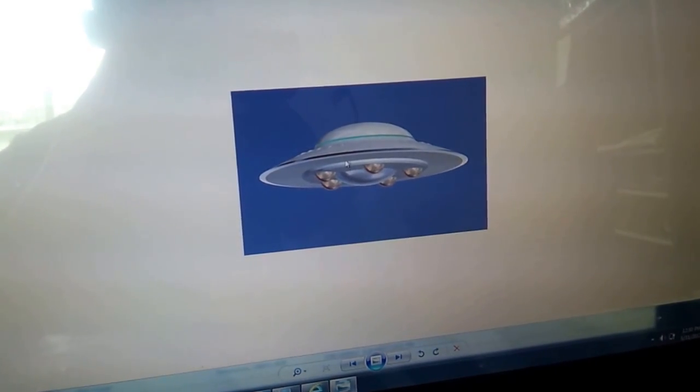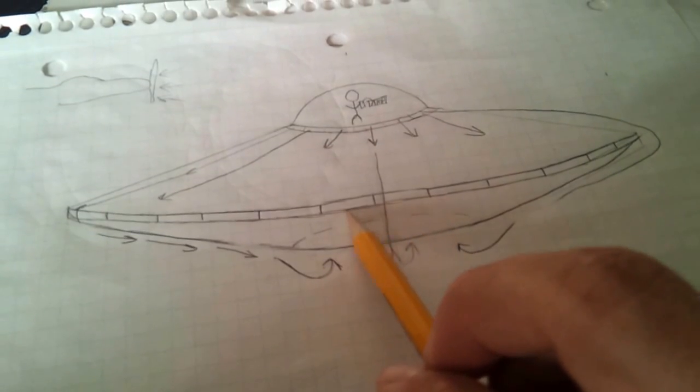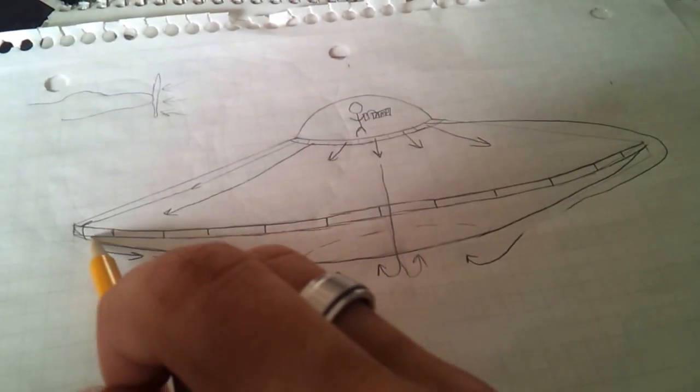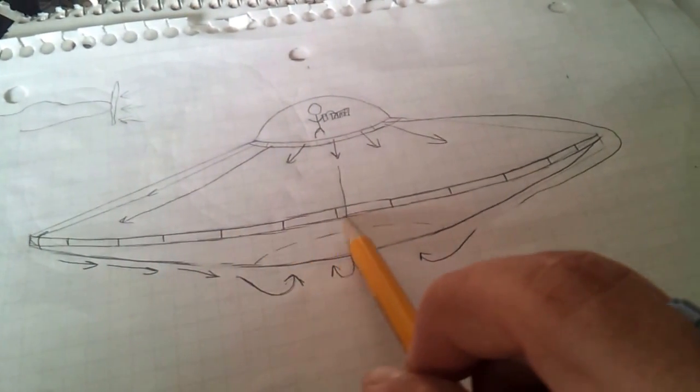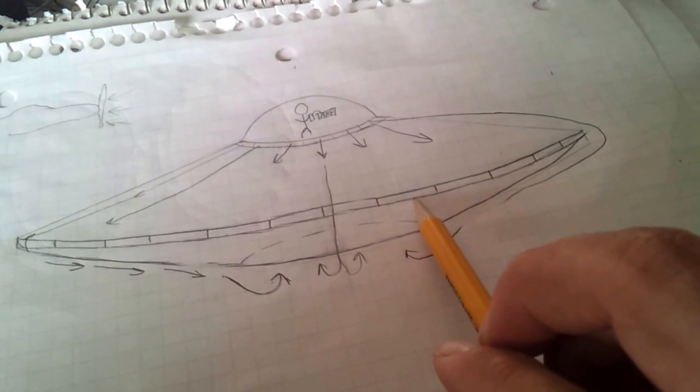Now how would you steer it? Well, all along the edge here there would be vents that you've seen on the pictures of the flying saucers. Those vents are closed at all times.